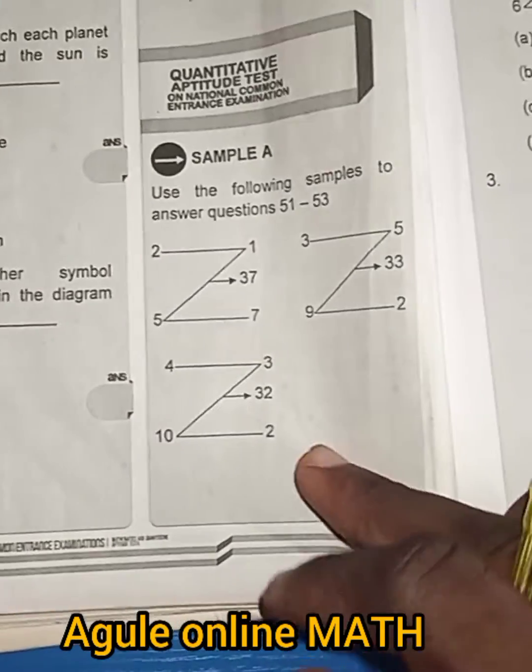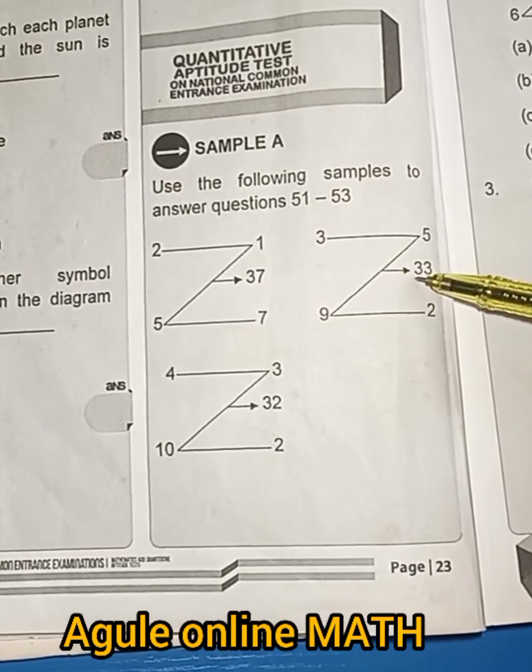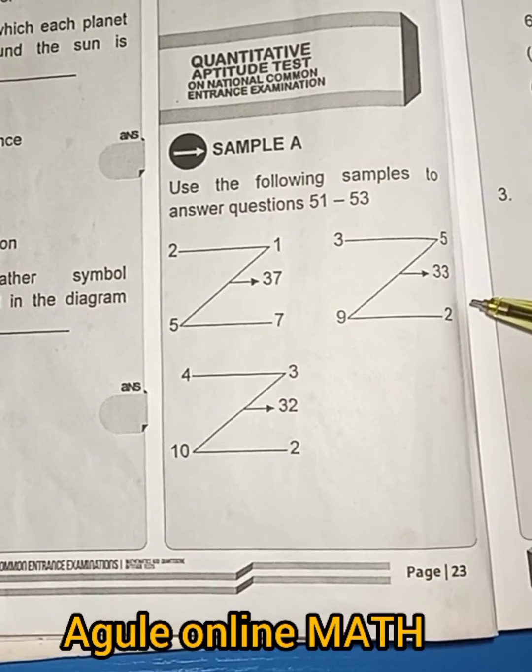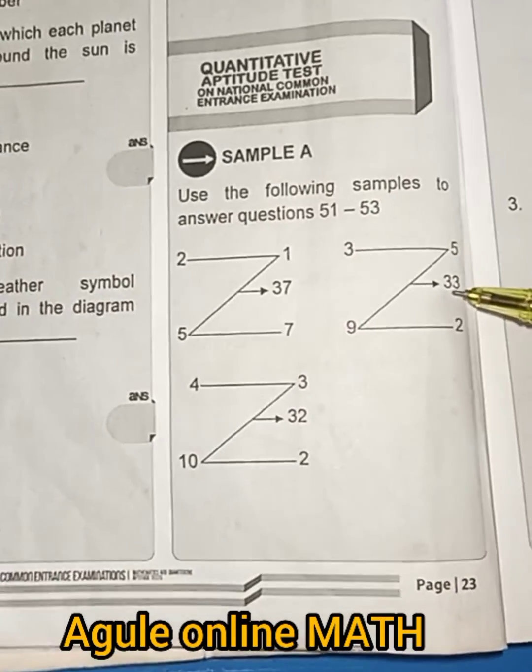The same thing here. If you want to get 33, you do 3 times 5, that is 15. 9 times 2, that is 18. 18 plus 15 is 33.